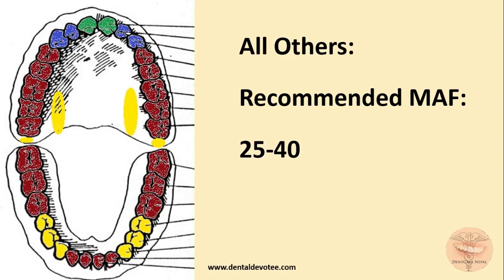Another group to memorize is mandibular canines and premolars, and maxillary molars — distal and palatal roots only. These are denoted with the color yellow in the figure, and the recommended master apical file size is 30 to 50. For all others, the recommended master apical file size is 25 to 40. The size 40 file is black, but for convenience brown color is used here so all the teeth remain visible.